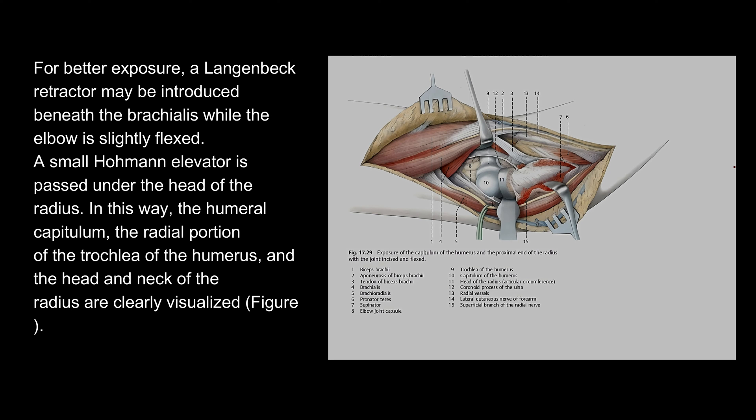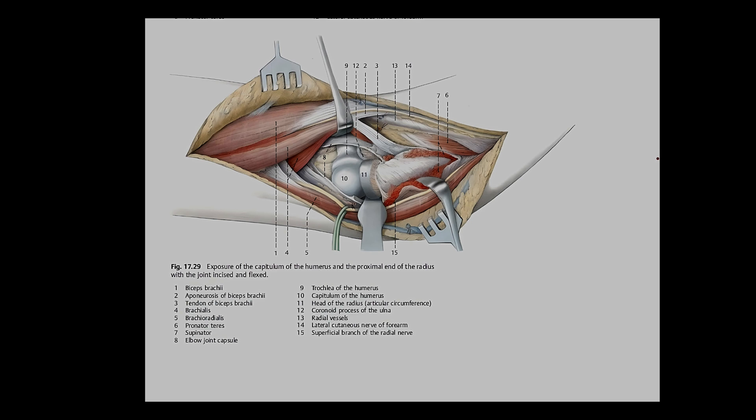For better exposure, a Langenbeck retractor may be introduced beneath the brachialis while the elbow is slightly flexed. A small Hohmann elevator is passed under the head of the radius. In this way, the humeral capitulum, the radial portion of the trochlea of the humerus, and the head and neck of the radius are clearly visualized.